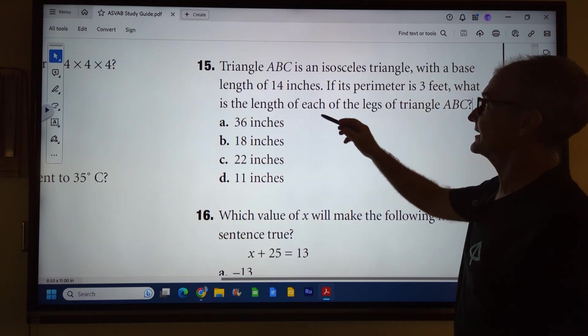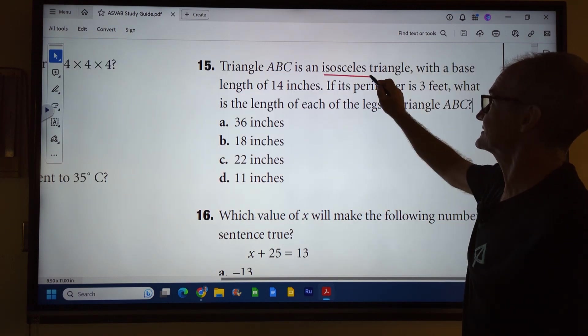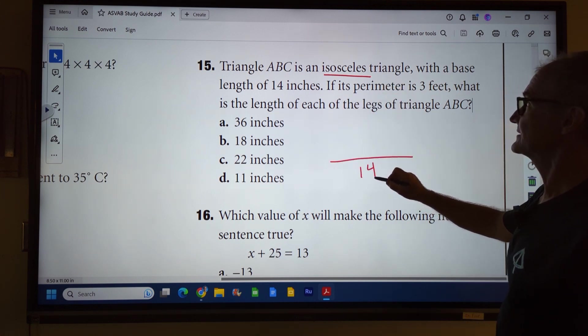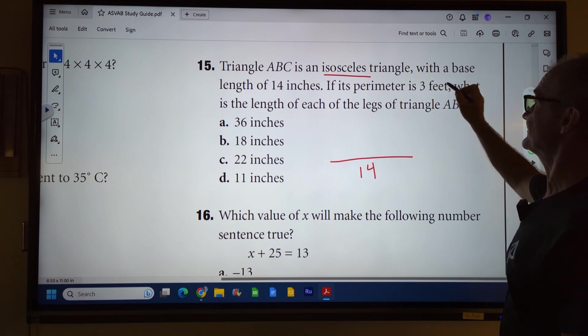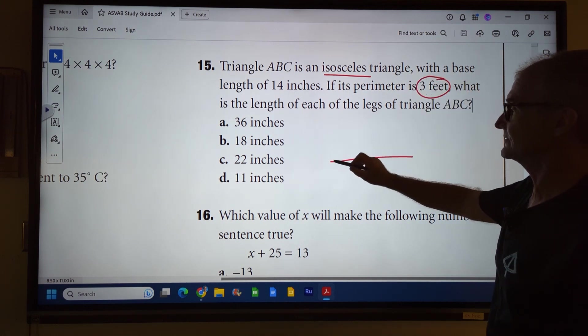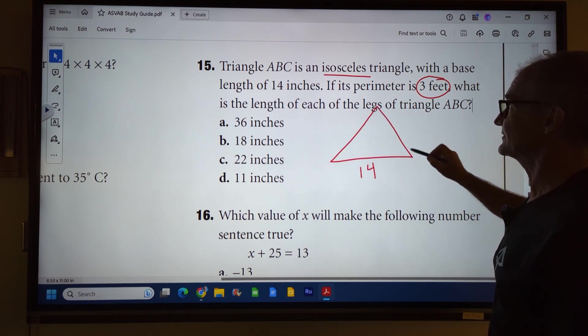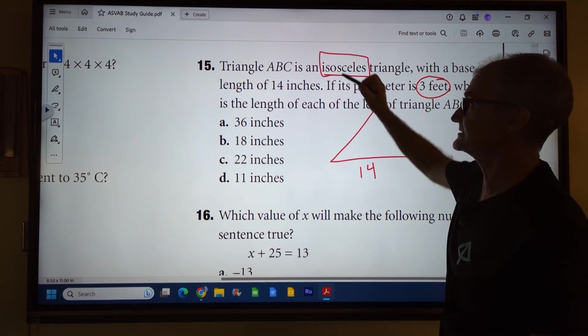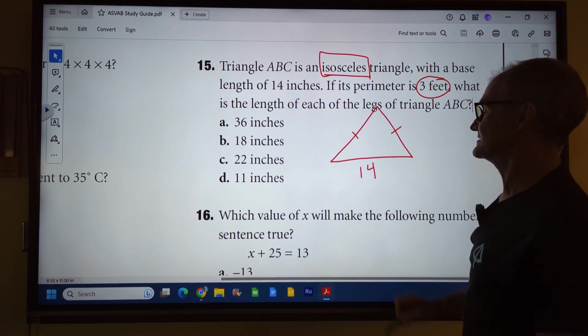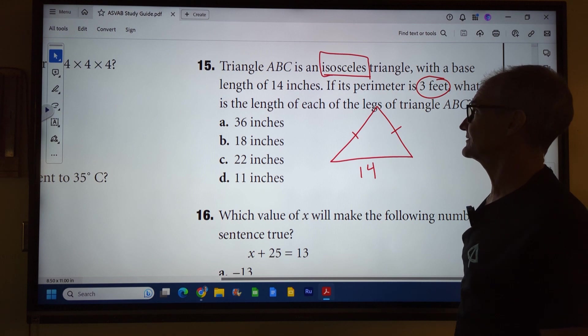Number 15: Triangle ABC is an isosceles triangle with a base of 14 inches and its perimeter is three feet. What is the length of each of the legs of the triangle? So there's a lot of vocab here. The first word is isosceles. Isosceles means two equal sides. So this and this are congruent or the same length.